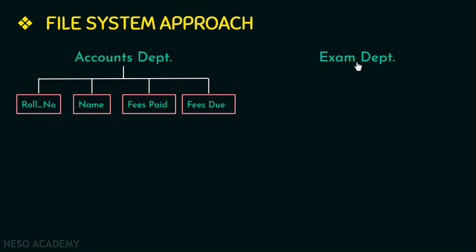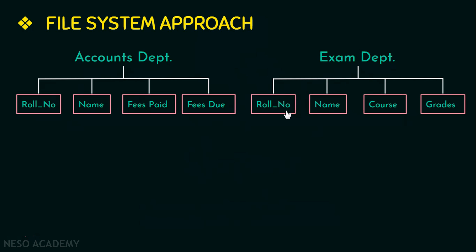And if I have another user, say the exam department, who keeps track of the grades received by the students — that is, it can have student roll number, student name, course, and the grades received by that student in a particular course. Here both users are interested in data about students, but they have to maintain different files because both have different interests. The accounts department is only interested in the fee details, whereas the exam department is only interested in the grades received by the student in each course. So since both have different interests, they cannot have a common file and hence have to maintain different files.